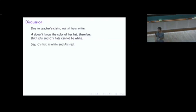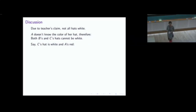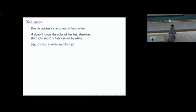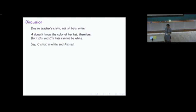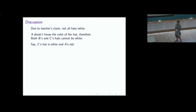Consider the configuration where C is wearing a white hat and A is wearing a red hat. If B is wearing a white hat, A has already said she doesn't know her colour. If this configuration held, B should have been able to deduce her colour: because A was not able to guess, one of B or C must be wearing a red hat. If C is wearing white, then B must be red.